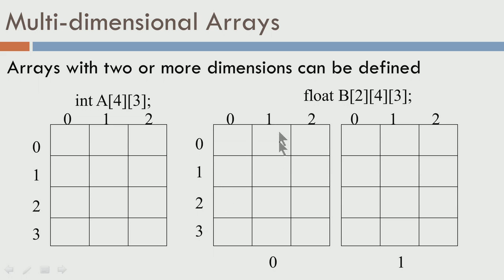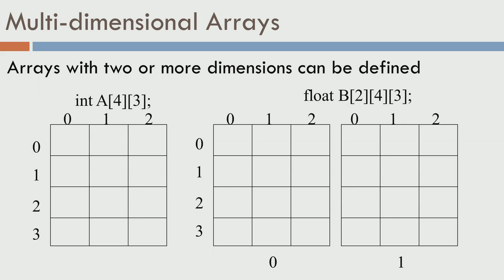You can also design arrays which are more than two dimensions. For example, here we have float b[2][4][3]. You can think of this as two planes, each plane having four rows and three columns. So you have the 0th plane and the 1st plane, and within each plane you have the 0th row, 1st row, 2nd row, and 3rd row, and similarly 0th column, 1st column, and so on.